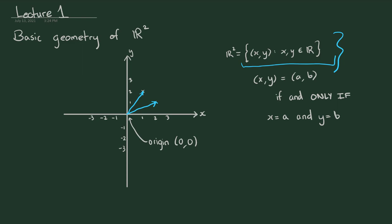With vectors, you can have vector addition, vector subtraction, and multiplying a vector by a scalar — some real number. For vector addition, we draw a parallelogram: if we label the vectors v and w, the position vector of the resulting point is v plus w. Similarly, multiplying the vector v by 2 (scalar multiplication) simply doubles the length of v. These are the basic facts about the geometry of R² that we will use for our study of complex numbers.